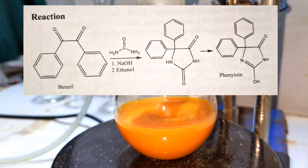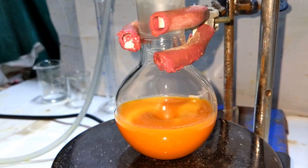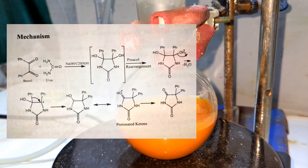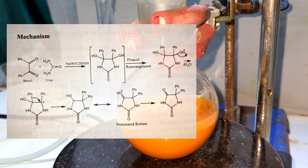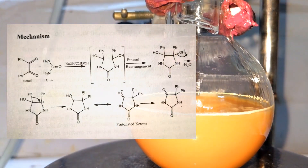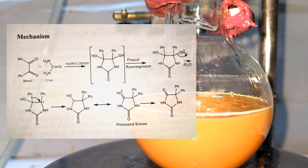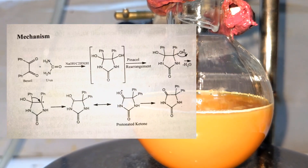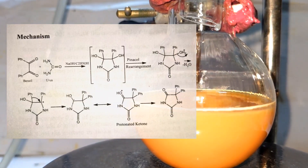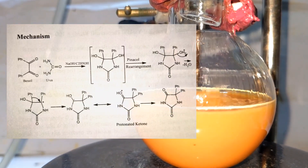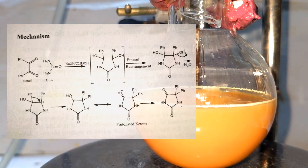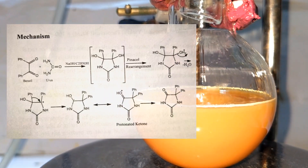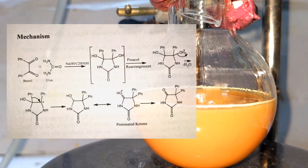It is a base-catalyzed reaction between benzyl and urea. The reaction proceeds via an intramolecular cyclization to form an intermediate heterocyclic pinacol, which is soluble in water. Later, acidification yields phenytoin as a result of a 1,2-diphenyl shift in the pinacol rearrangement reaction.